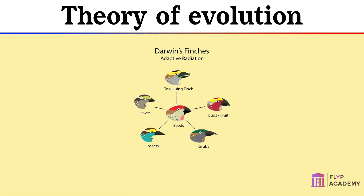As more was discovered about inheritance and more fossils were discovered, showing that organisms on earth showed gradual changes over time, Darwin's theory was gradually accepted.